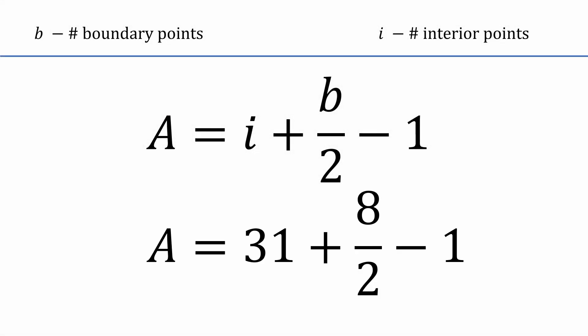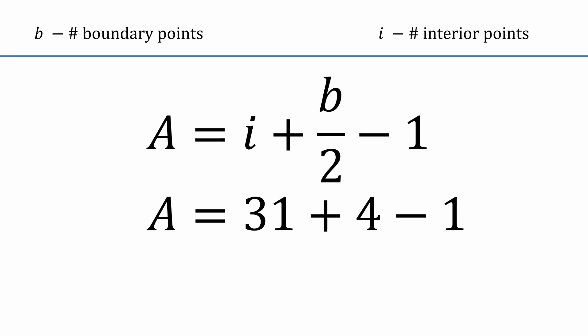We have 31 plus 8 over 2 minus 1, which is 31 plus 4 minus 1, and that's 34. Exactly what we got using the somewhat more cumbersome approach of breaking the polygon down into rectangles and triangles and adding up all their areas.